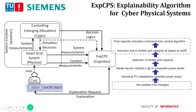In order for the XCPS system to deliver explanations, it needs an internal representation of the system state — obtainable from system measurements and actuation actions — as well as information about the system contexts relevant for the explanation task, such as the weather in our example.